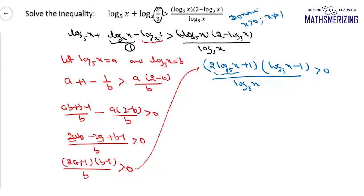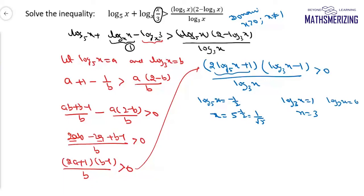Now I'll find the critical points. From the first factor, log x base 5 equals minus 1 by 2, so x is 5 to the power minus 1 by 2, which is 1 upon root 5. From the second factor, log x base 3 equals 1, giving x equals 3. From the denominator, log x base 3 equals 0, giving x equals 1. So the three critical points are 1 over root 5, 1, and 3.